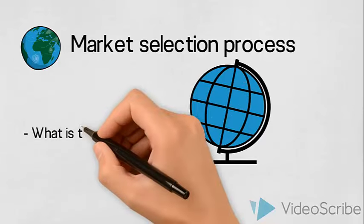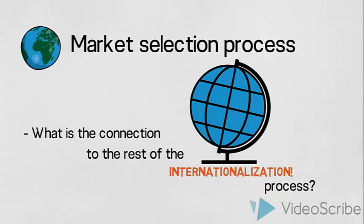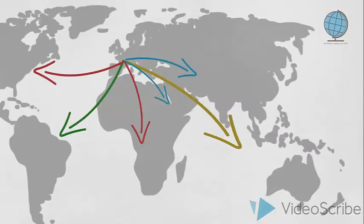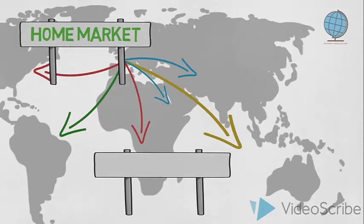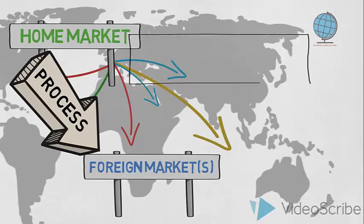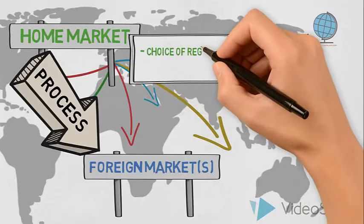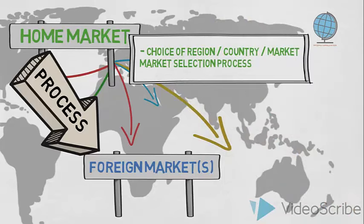What is the connection to the rest of an organization's internationalization process? When an organization goes from marketing their products and services only on their home market to also targeting one or several foreign markets in different countries or regions, we talk about an organization's internationalization process. This process starts with the choice of which foreign markets to target — we call this the market selection process.